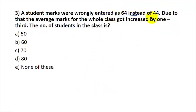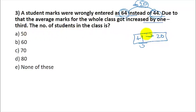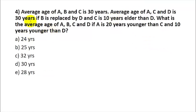Hard Q3: A student's marks were wrongly entered as 64 instead of 44, due to which the average marks of the whole class increased by 1/3. The error introduced is 64 − 44 = 20. Since this error of 20 caused an average increase of 1/3, the number of students = 20 ÷ (1/3) = 60. Answer is option B.